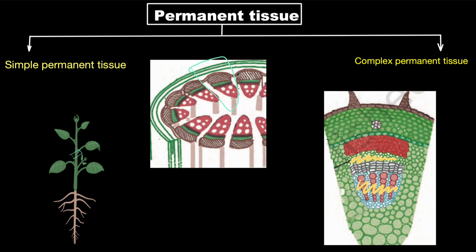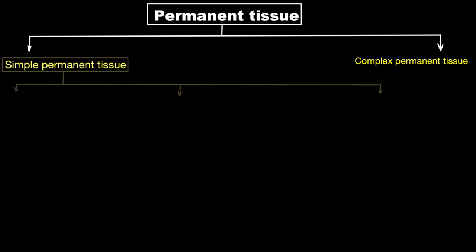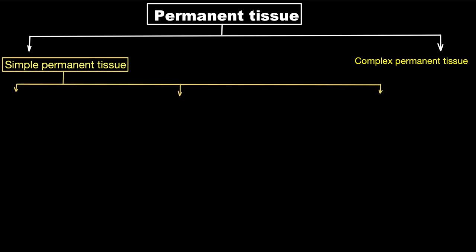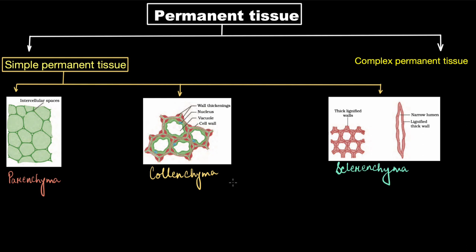Looking at the other parts made up of simple permanent tissue, you can observe that they are of different shapes and colors, which indicates that simple permanent tissues are again of different types. Here are the three types of simple permanent tissue: we call them parenchyma, colenchyma, and sclerenchyma.